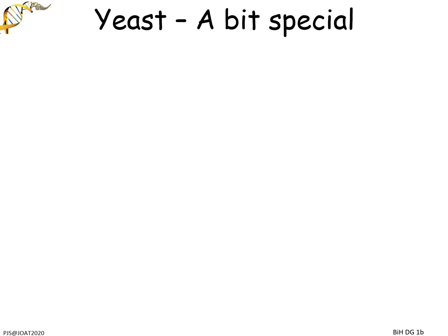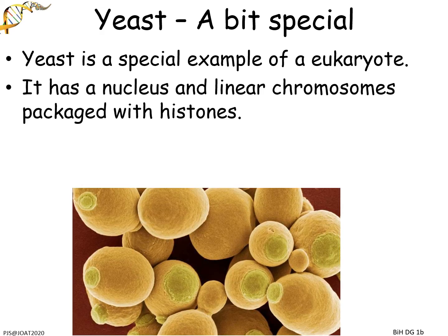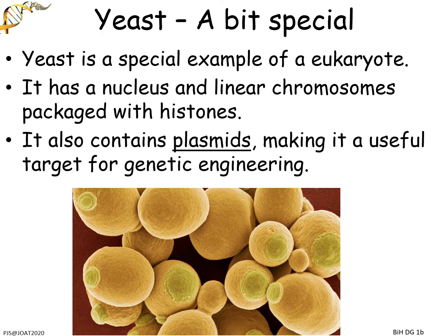Yeast is a special exception you need to be aware of. It is a eukaryote, so it has linear chromosomes packed inside a nucleus with histones, but a yeast cell also has plasmids - which is not normal for a eukaryote. This means you can potentially genetically engineer a eukaryotic cell. Sometimes if you take a gene from us and put it into a prokaryote it doesn't work properly, but if you do it in yeast, it will work because yeast can process eukaryotic proteins correctly.